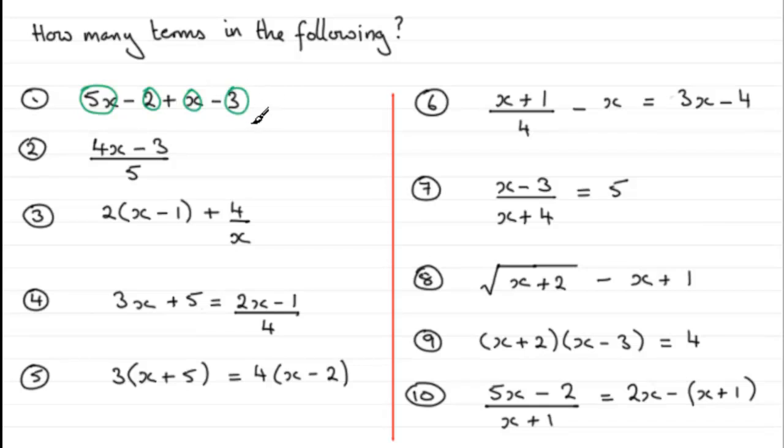In number two, we have an expression and remember the division locks this all up as one term. So we've got one term for that. In number three, for this expression we've got one term here, 3 multiplied by (x - 1), and then we have our separator, the plus, and we have 4 divided by x which is the second term.